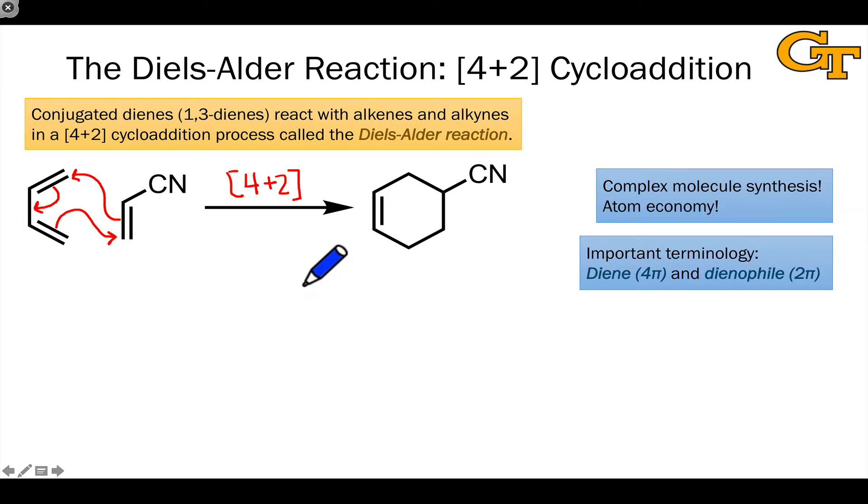Let's talk about some important terminology in this reaction. The four-atom component, the substrate containing the four-atom pi system, is known as the diene, hopefully for fairly obvious reasons. It's got two double bonds in conjugation with each other, di for two, ene for double bonds.